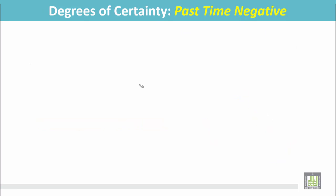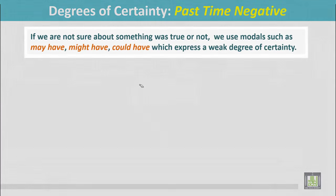Degrees of Certainty: Past Time Negative. If we are not sure about something was true or not, we use modals such as may have, might have, could have, which express a weak degree of certainty.